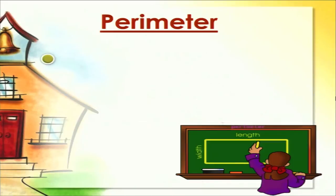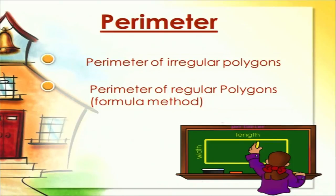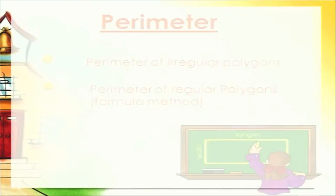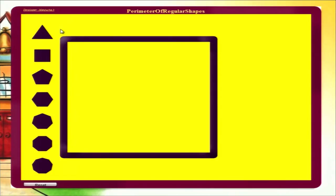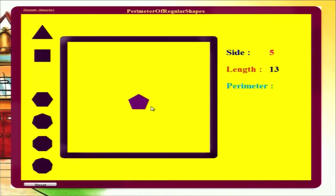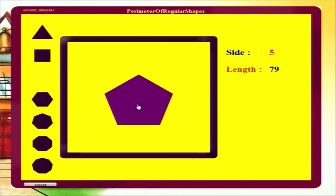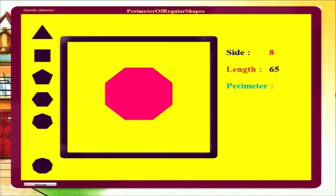The next module is perimeter, defined as the length of the boundaries. We have covered several activities to determine the perimeter of regular and irregular polygons, and also used fields and fences — measuring fence lengths to calculate the perimeter of irregular polygons. In the activity, clicking a regular polygon brings it into the drawing area, the number of sides and a randomly generated length are shown, and the perimeter is calculated using the formula: number of sides multiplied by length. Clicking the polygon resizes it and the length changes accordingly.